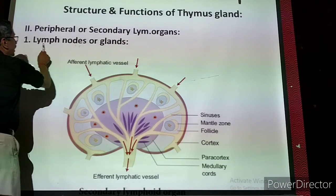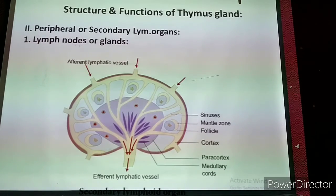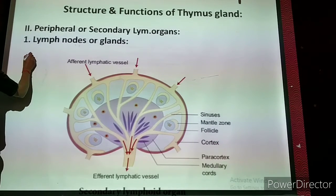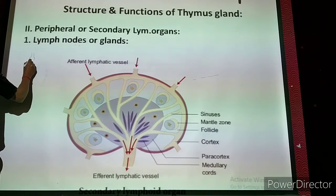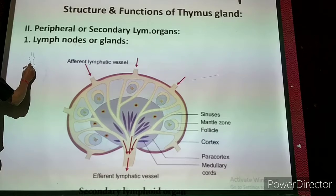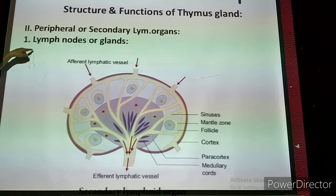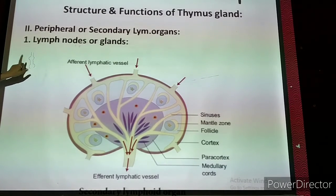The first secondary lymphoid organ is the lymph node or lymph gland. A small lymphatic vessel has bulging portions — again a vessel, again a bulging portion — like a chain going on. The bulging portions are called lymph nodes or lymph glands.